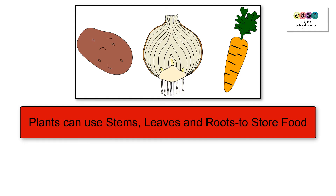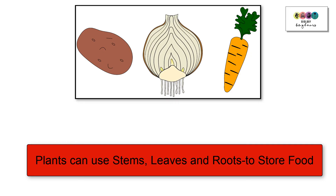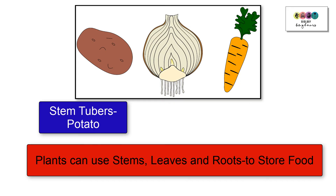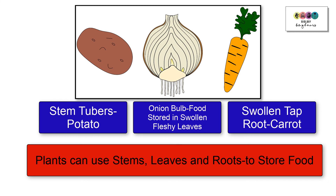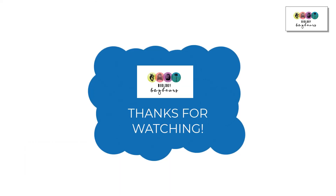To review: plants can use stems, leaves, and roots to store food — these can be modified depending on the plant. An example of a plant that modifies its stem to store food is the potato plant, which forms stem tubers — a potato is the swollen tip of an underground stem. The onion bulb is an example of modified leaves used for food storage, and the carrot stores food in a swollen tap root. Make sure you can draw and label the onion diagram really well.